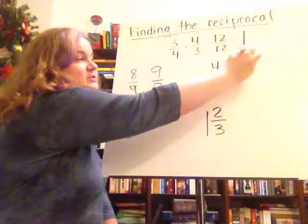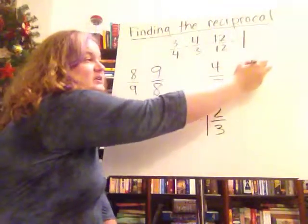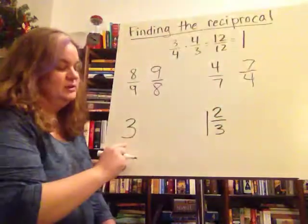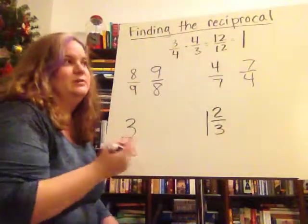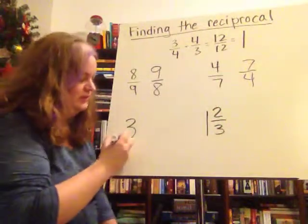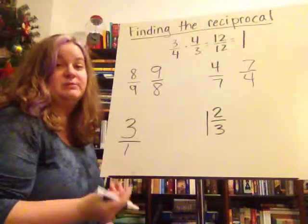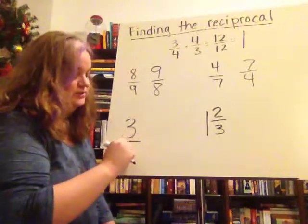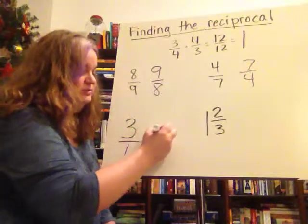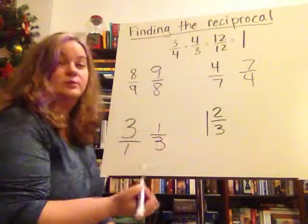Four-sevenths, the reciprocal then would be seven-fourths. When you have something like three, you're like, hey, wait a minute, how do I flip that one over? Well, remember that any whole number can be made a fraction by putting it over one, so then you can flip it. So the reciprocal to three would be one-third.